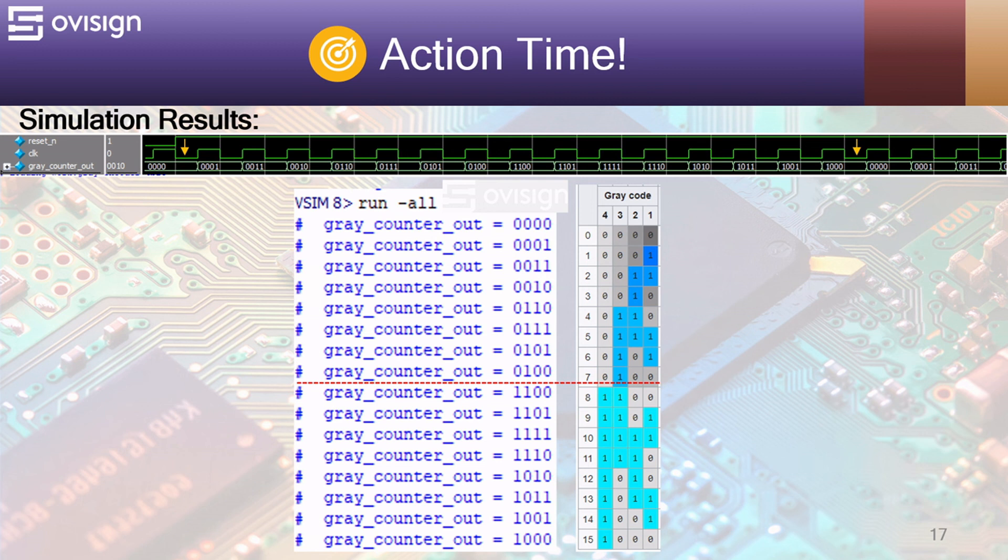If you look at the yellow arrows you can see the gray counter starts to cycle from the initial value. If we look at the console result we can see how our counter takes sequentially all the 4-bit gray code values.